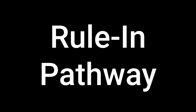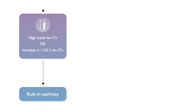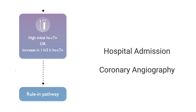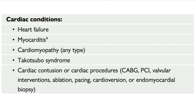For the rule-in pathway, if the initial troponin is elevated or there is a significant increase after one or two hours, this means MI rule-in. The vast majority of rule-in patients will require hospital admission and invasive coronary angiography. But keep in mind that rule-in patients can still have other causes for troponin elevation — the thresholds for rule-in were selected to allow a positive predictive value of 70%. So it can still be pericarditis, myocarditis, aortic dissection, pulmonary embolism, or cardiomyopathy. These patients will still require specialist cardiology care and non-invasive imaging to establish an accurate final diagnosis.